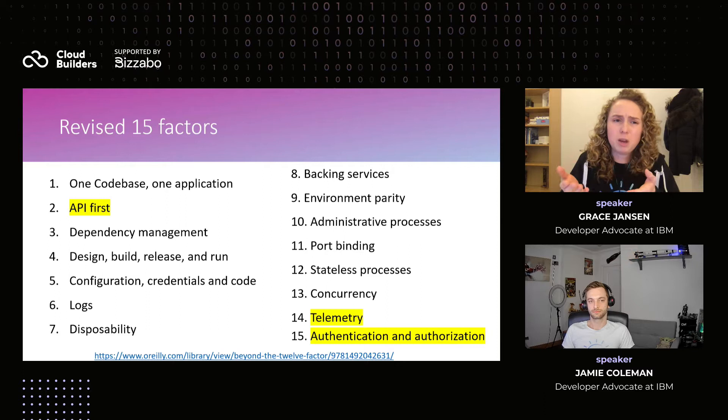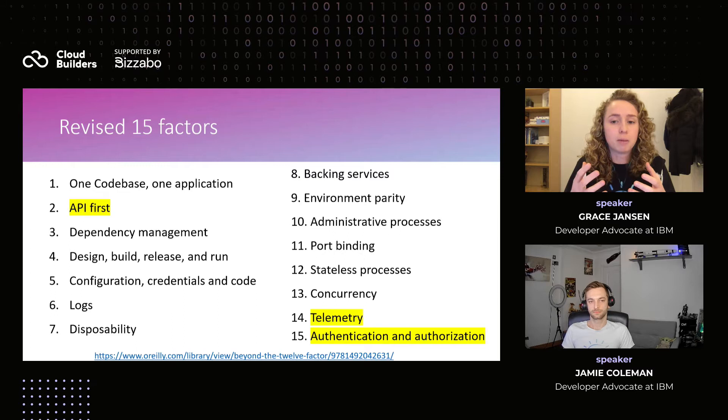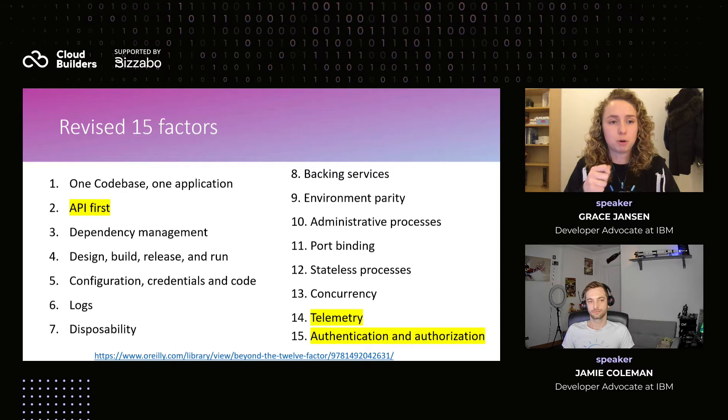Things like environmental parity — in the original factors that was just 'dev/prod parity.' But we have more environments than just development and production. It's actually about keeping all of our environments as similar as possible: QA, testing, development, production, whatever it may be. So we've made that a broader factor, incorporating environments that might not have been included before. You can see how these have been iterated upon.